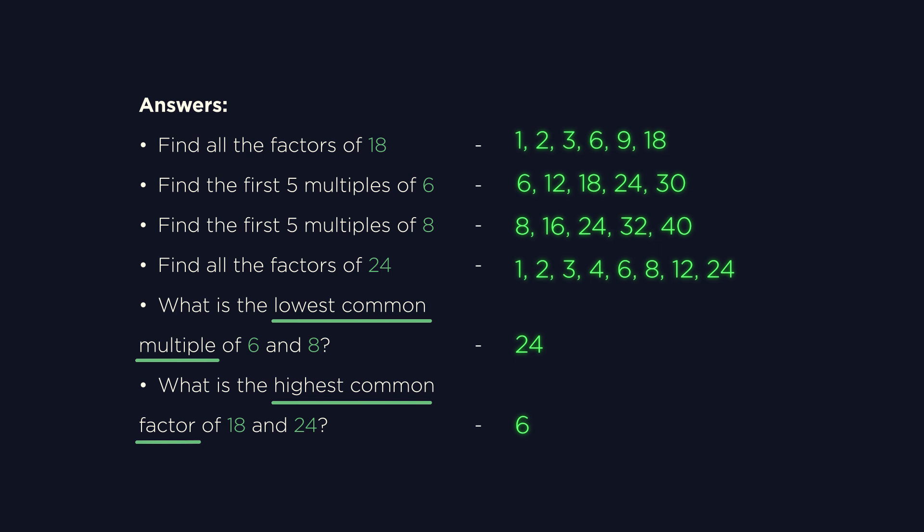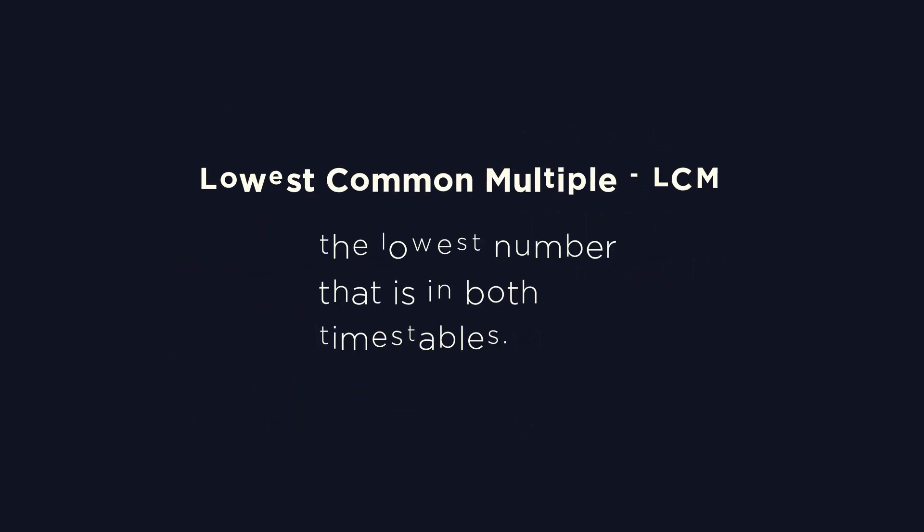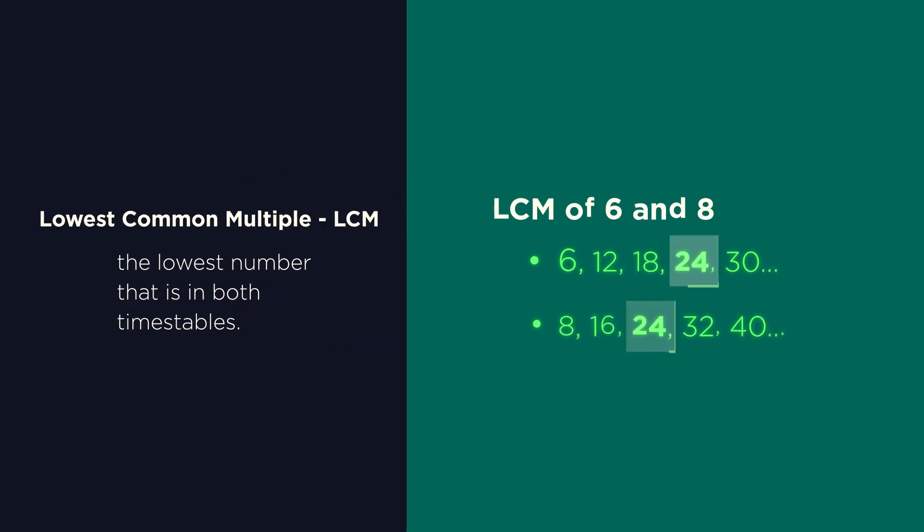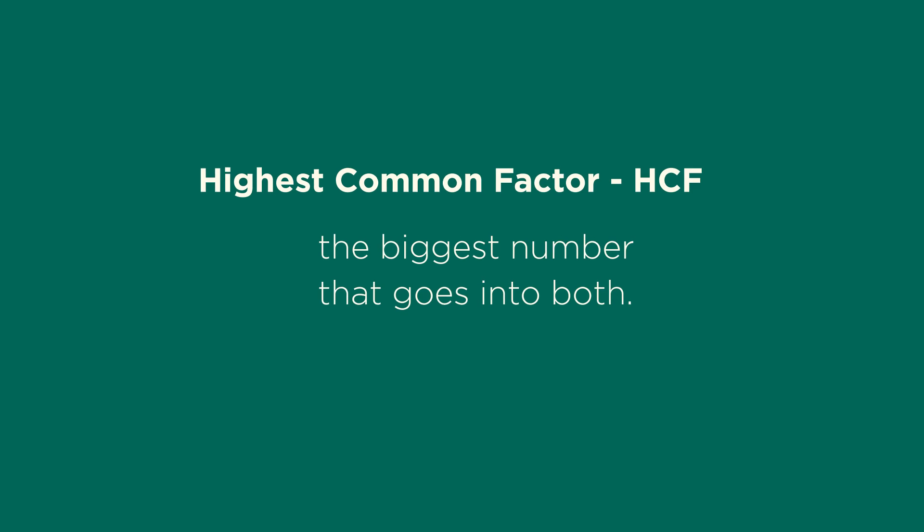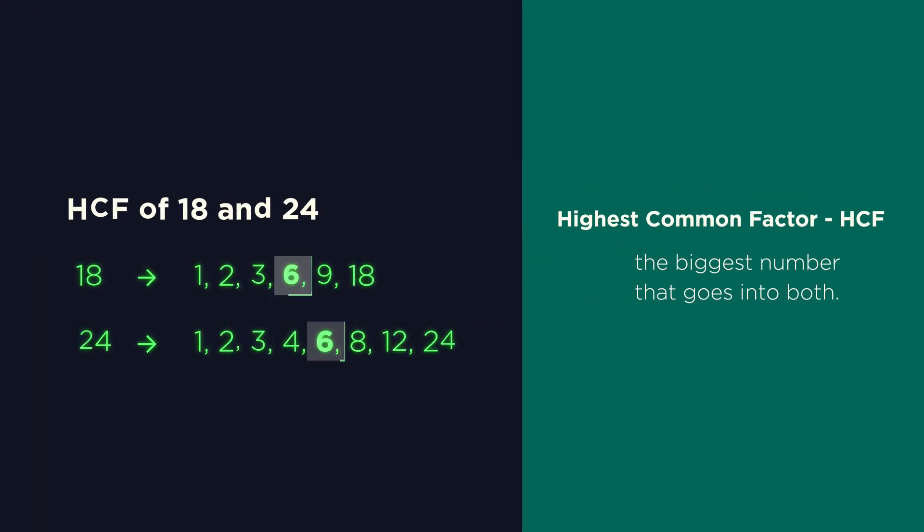Did you get them right? So the lowest common multiple just means the lowest number that is in both times tables. And it's often written as LCM. So 24 is the lowest number that is in both the 6 and 8 times tables. And the highest common factor or HCF is the biggest number that goes into both 18 and 24.